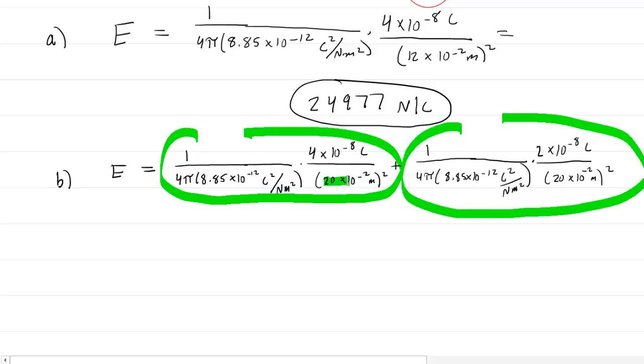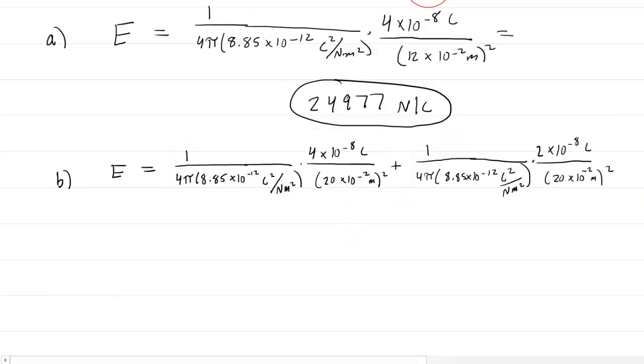Notice that we've converted the distance into meters by multiplying 20 centimeters by 10^-2 to get it into meters. Now you might also notice that we have a GCF here—it might be easier for the computation to factor it out.